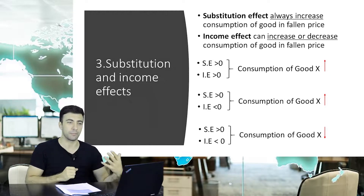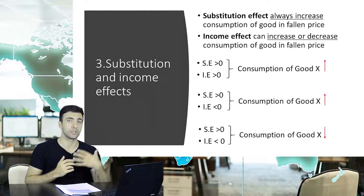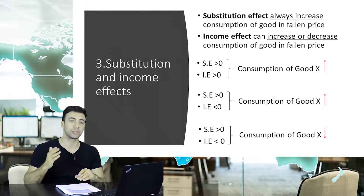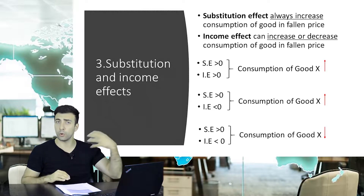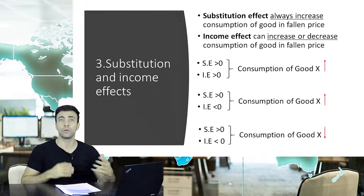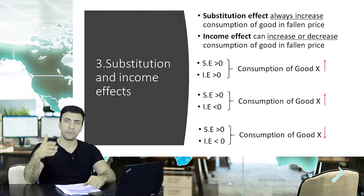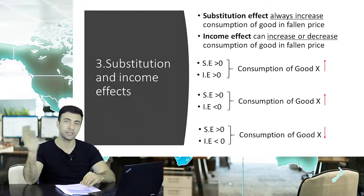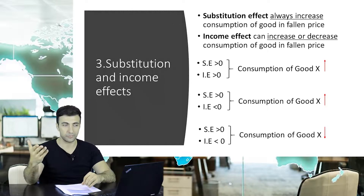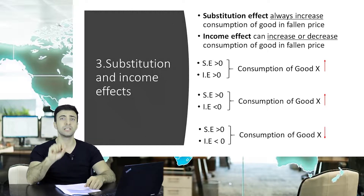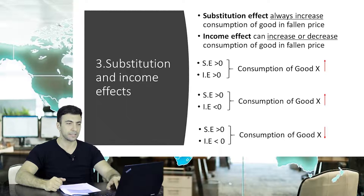We also have the income effect. In contrast to the substitution effect, the income effect can either increase or decrease the consumption of the good whose price has fallen. Recall that we covered normal goods and inferior goods. In normal goods, the income effect increases consumption of the fallen-price good, while in inferior goods this is vice versa.